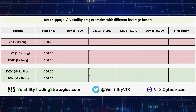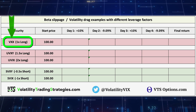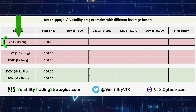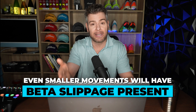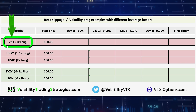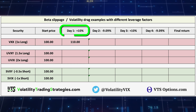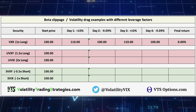Here we've got a table with all the main volatility ETPs listed along with their leverage factor. The VXX is the baseline because there is no leverage involved — it's just a one-times-long volatility product. I'm going to exaggerate the movement to illustrate it, but even smaller movements will have Beta Slippage present — it'll just take longer than four days to see it. For the baseline VXX, we show it going up 10% on day one, down 9.09% on day two, up 10% again on day three, and then down 9.09% on day four — a four-day round trip and the price has not changed.